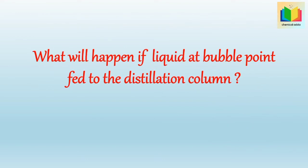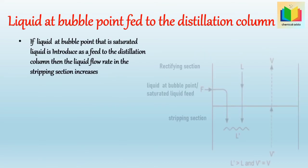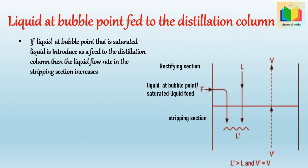Next question: what will happen if liquid at bubble point is fed to the distillation column? If liquid which is at bubble point is introduced as feed, then the liquid flow rate in the stripping section increases, and the vapor flow rate in the rectification section will be the same as in the stripping section, because the feed liquid is already at bubble point. Hence we get L' > L and V = V'.